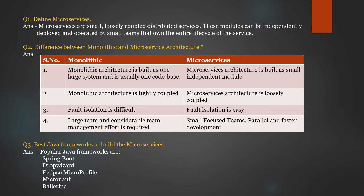The third question is the best Java frameworks to build microservices. First is Spring Boot, which is the most common open source framework that easily deploys on various platforms. It has built-in features like security, auto-config, and starter dependencies. Dropwizard is an open source framework for rapid development of RESTful web services. Eclipse MicroProfile upgrades Java Enterprise Edition and is aimed at optimizing Enterprise Java for building microservices and cloud-native apps. Micronaut provides excellent support for cloud deployment, service discovery, Kubernetes, distributed tracing, and serverless functions. Ballerina is mainly for cloud computing.